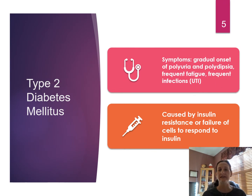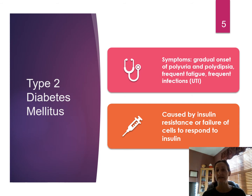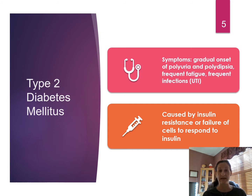With type 2 diabetes, there is an even more gradual onset of polyuria and polydipsia. Patients complain of frequent fatigue and some have frequent UTIs. This can go on for five to ten years before you see an elevation in the fasting blood glucose. The cause for type 2 is insulin resistance — typically due to obesity, because there are too many cells for the insulin to reach. In type 2, the pancreas is still secreting insulin, but the cells just aren't able to absorb it due to obesity.